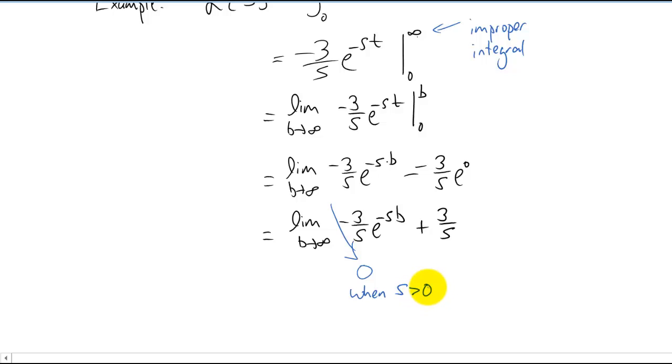So if s was negative five or something like that, this would be an exponential with the positive exponent and this limit would go off to infinity and actually this Laplace transform wouldn't even exist. So we're going to say this limit is zero, but we do need to include the condition that s does have to be bigger than zero.